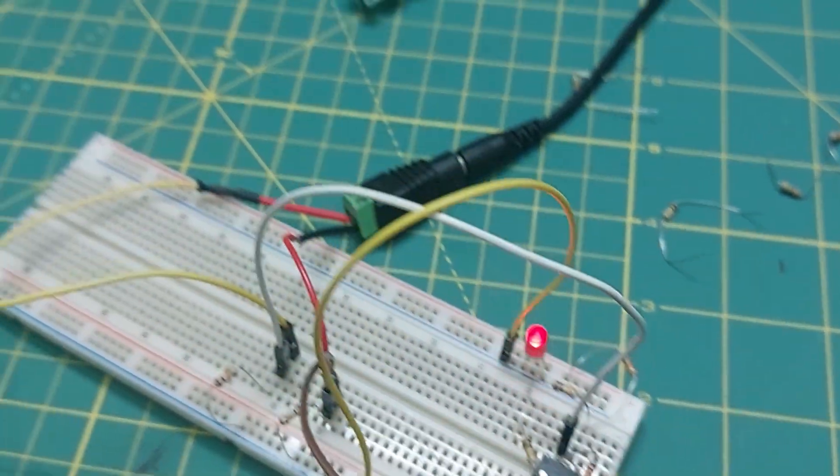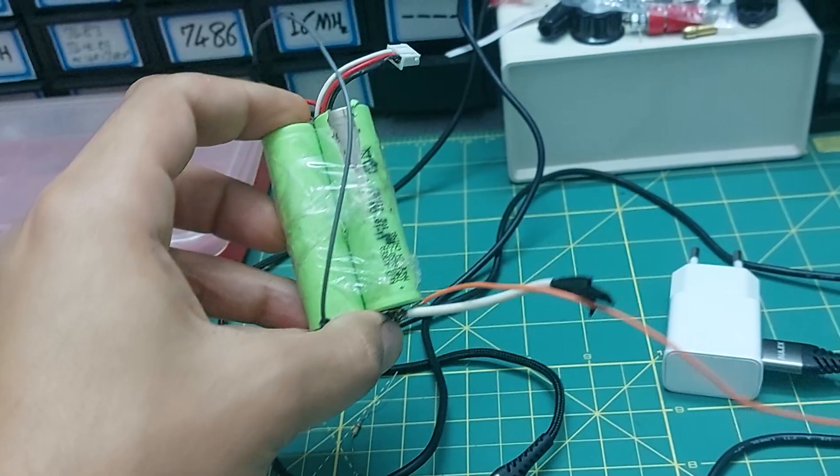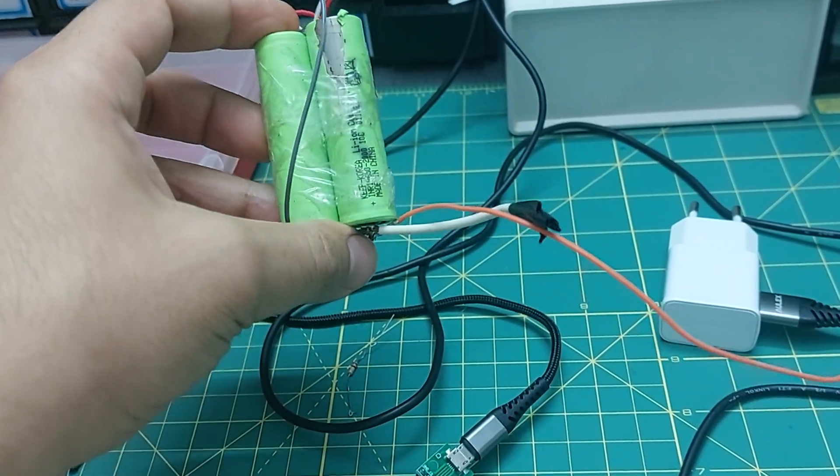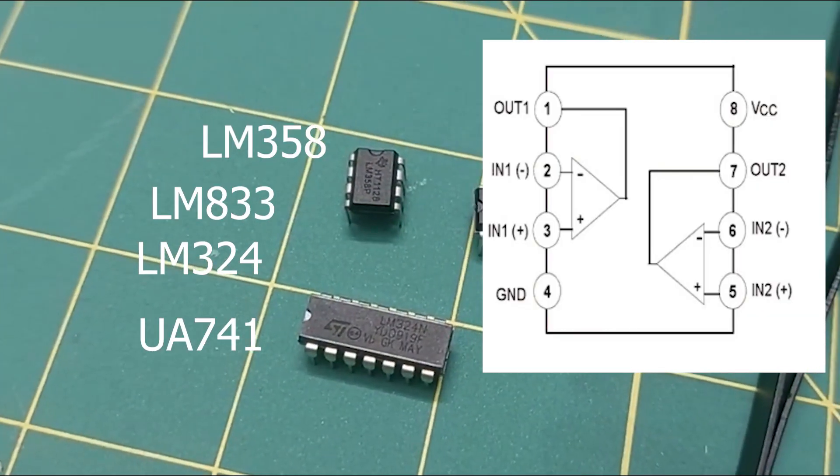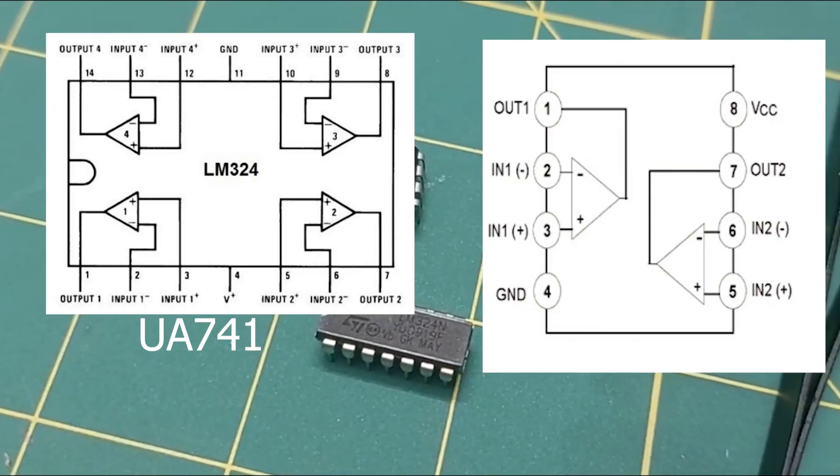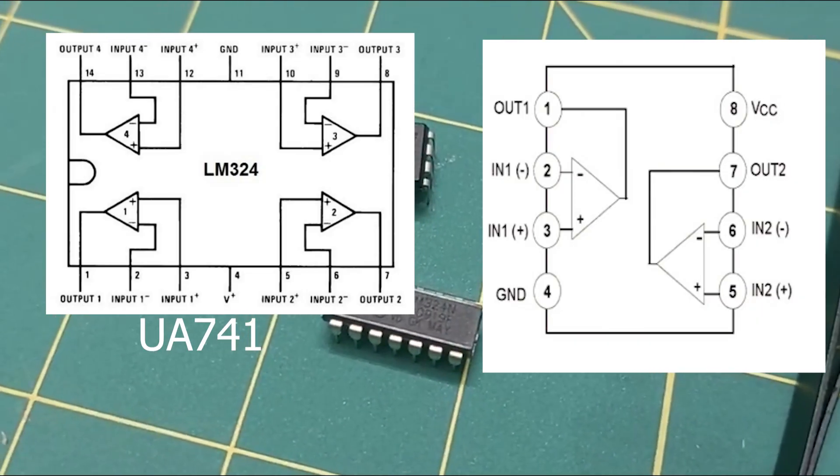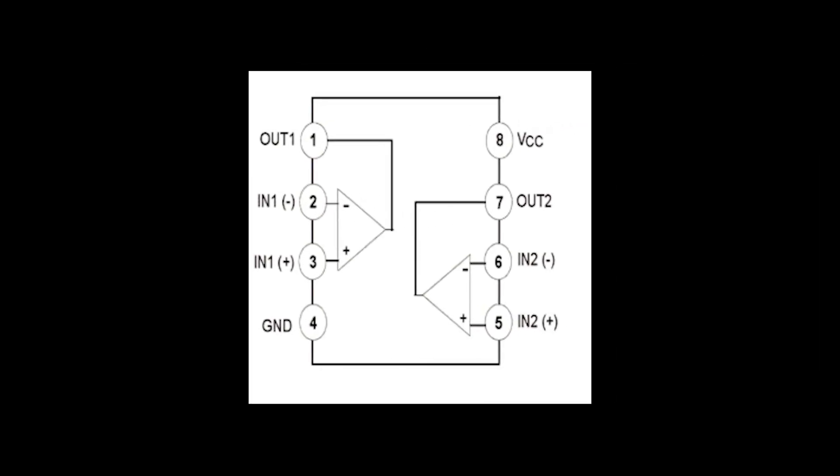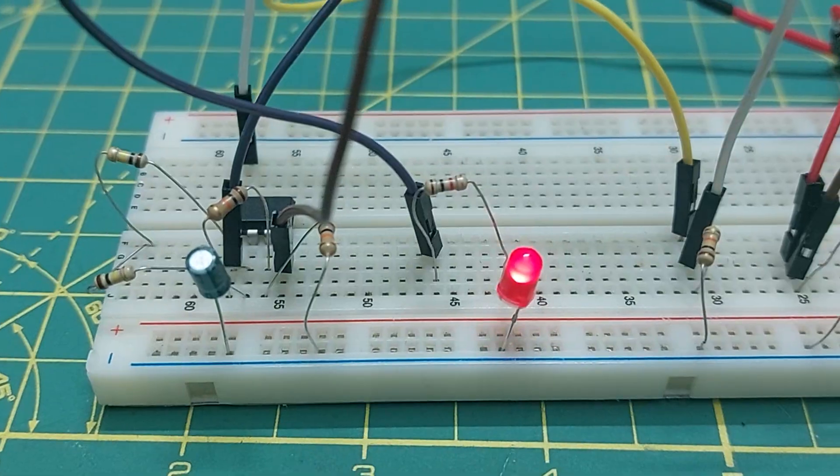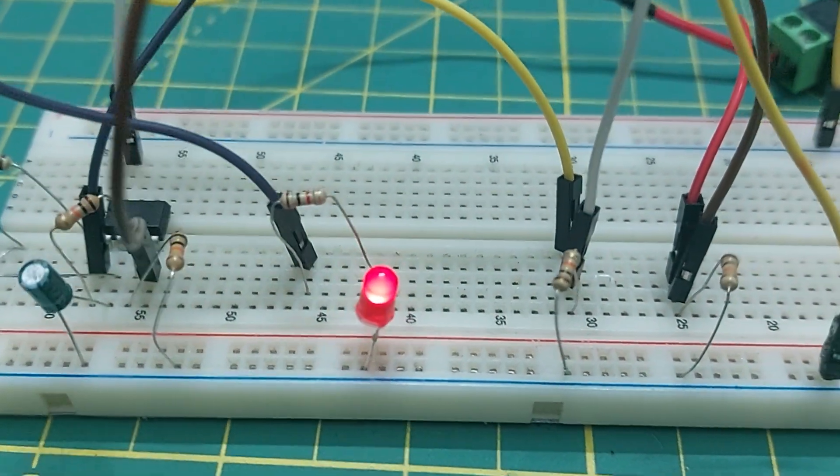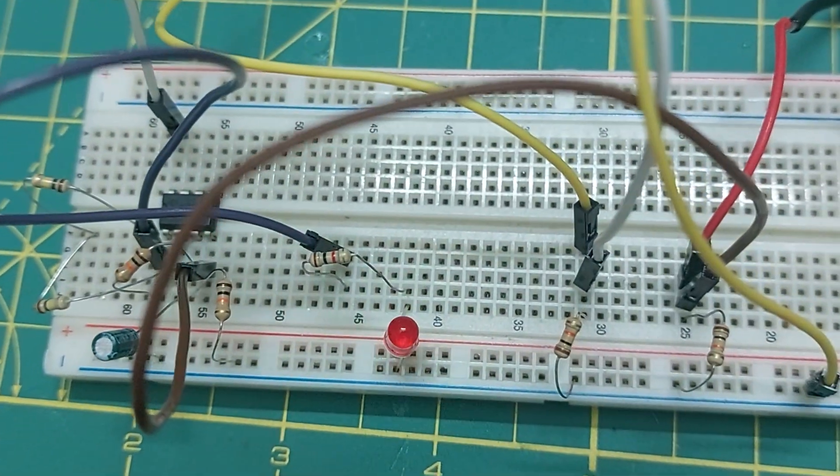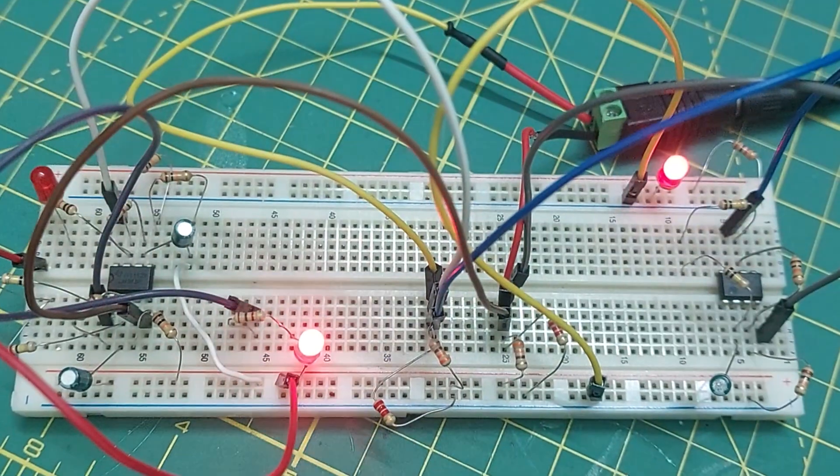It even works with a 7.4 volts power supply. Now, some op-amps have a different configuration compared to the classic 741, because they actually contain two op-amps inside a single chip. That means I'll need to design a separate tester for those kinds of ICs as well.